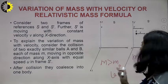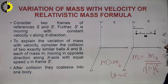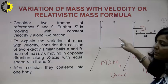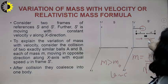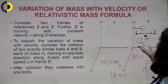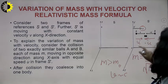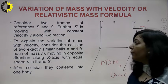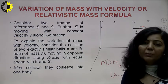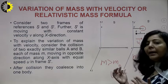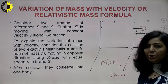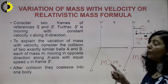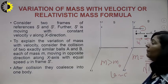We derived this relationship by taking two inertial frames S and S-dash. S is at rest, S-dash is moving with constant uniform velocity along the x-axis with respect to S. Two identical particles A and B are heading towards each other with the same speed but in opposite directions. If A is moving with U then B is moving with minus U. When they collide, they stick together and come to rest with respect to O-dash.